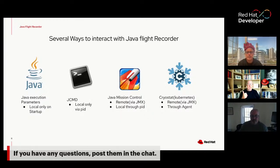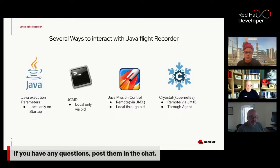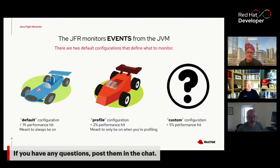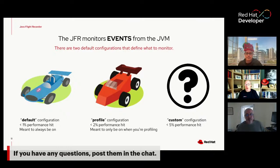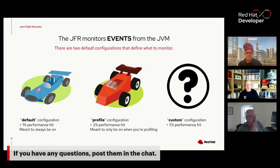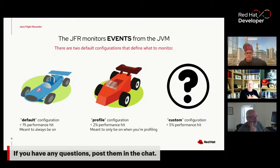Jeremy: This is really meant to be run all the time, right? Profiling tools are notorious for killing performance. Jay: Exactly. The default configuration — if you start JFR continuous recording — is less than a one percent performance hit and it's meant to always be on in the background. If you're doing profiling and looking for a problem, the profile configuration is less than two percent. Custom configuration with everything turned on aims for less than five percent. I've rarely had to use custom other than when configuring custom events.